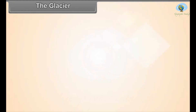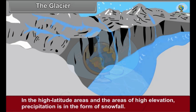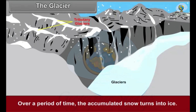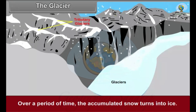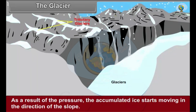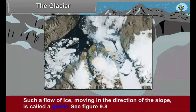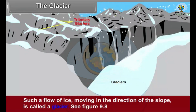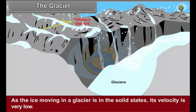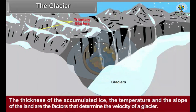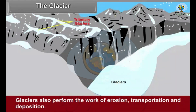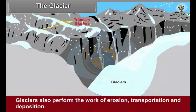The glacier: In high-latitude areas and areas of high elevation, precipitation is in the form of snowfall. Over a period of time the accumulated snow turns into ice as a result of pressure, and the accumulated ice starts moving in the direction of the slope. Such a flow of ice moving in the direction of slope is called a glacier. As the ice moving in a glacier is in the solid state, its velocity is very low. The thickness of accumulated ice, the temperature, and the slope of the land determine the velocity of a glacier. Glaciers also perform the work of erosion, transportation, and deposition.